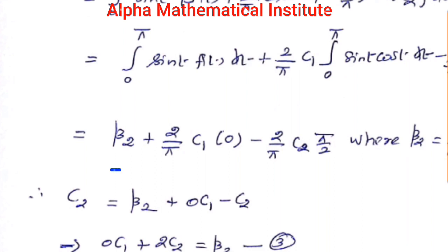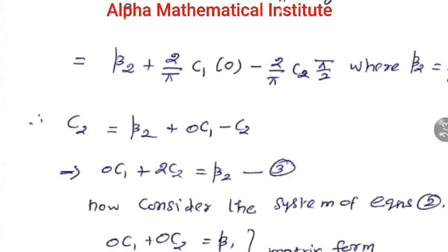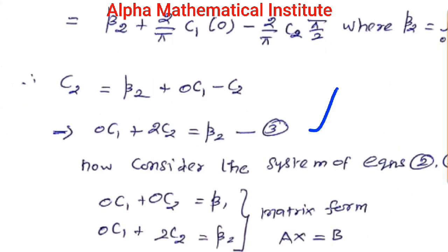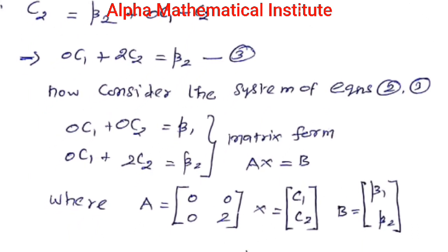Substituting these values, c2 = β2 + (2/π) · c1 · 0 minus (2/π) · c2 · (π/2), where β2 = integral from 0 to π of sin t · f(t) dt. This simplifies to: 0 · c1 + 2c2 = β2. Call this equation number 3.